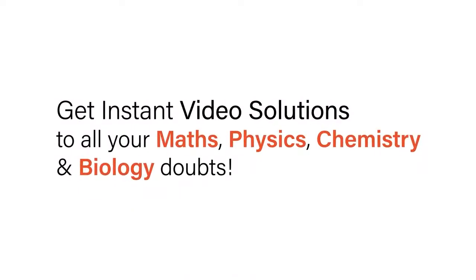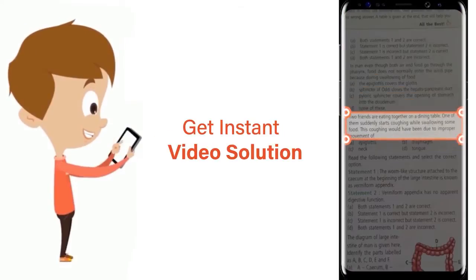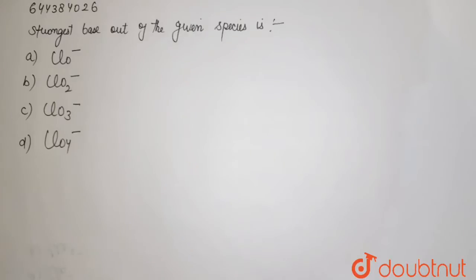With Doubtnet, get instant video solutions to all your math, physics, chemistry, and biology doubts. Just click the image of the question, crop the question, and get instant video solution. Download Doubtnet app today. Strongest base out of the given species is...